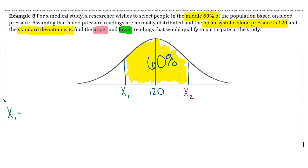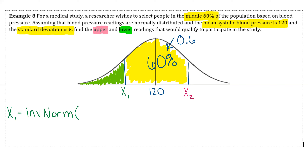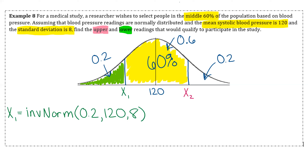To find x1, remember: if you're looking for the area under the curve use normal CDF; if you're looking for an x value on the number line use inverse norm. We need the area to the left of x1. The outside regions total 40 percent, and by symmetry each tail is 20 percent, so the area to the left of x1 is 0.2. Doing inverse norm of 0.2 with mean 120 and sigma 8 gives x1 approximately 113.27.